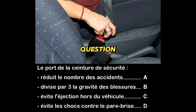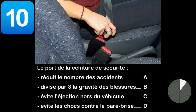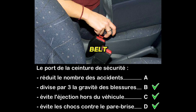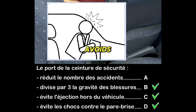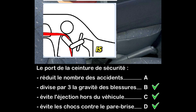Question ten: does wearing a seat belt reduce the number of accidents (A), divide the severity of injuries by three (B), avoid ejection from the vehicle (C), or avoid shocks against the windshield (D)? The seat belt does not reduce the number of accidents, but it reduces the consequences. It divides by three the severity of injuries and the risk of being killed. It also avoids shocks against the windshield, which cause serious facial injuries, and prevents ejection. A car occupant is 10 times more likely to die if ejected than if held by their seat belt.